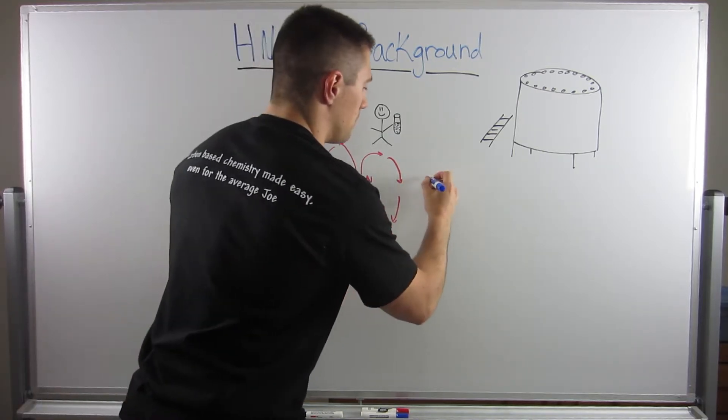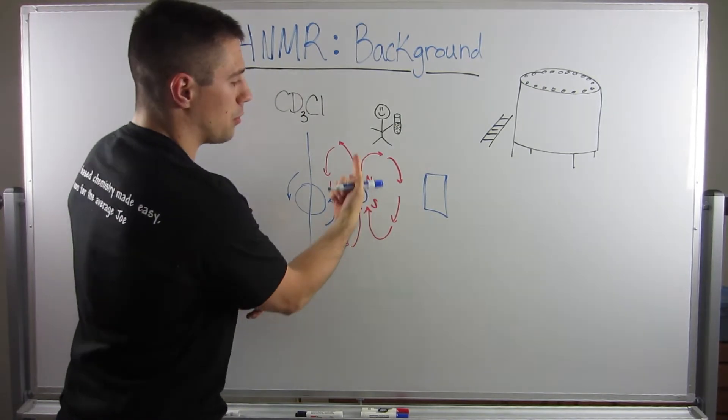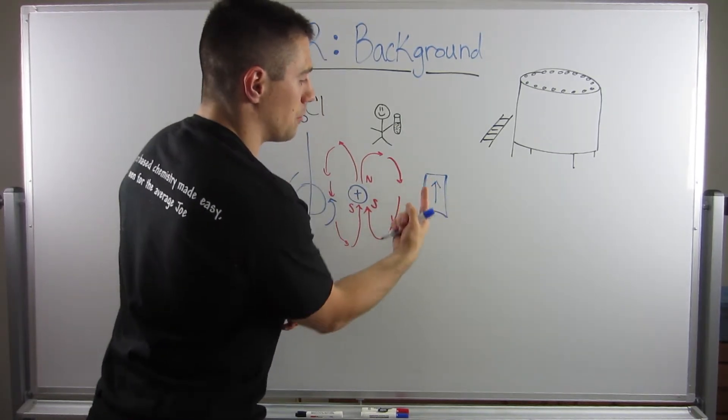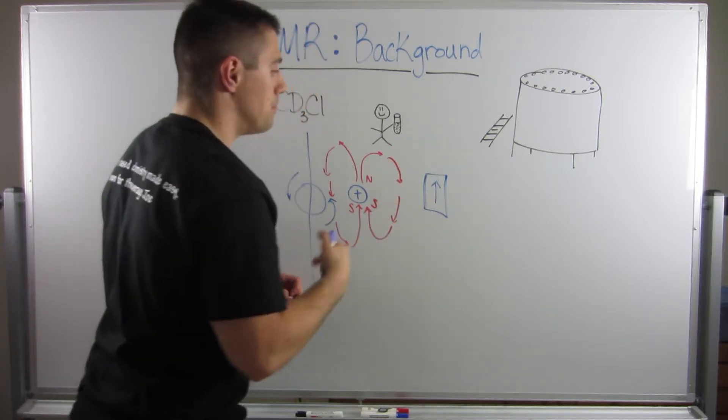And I'm going to designate them by looking like this. So because the North Pole is going this way, I'll draw a little bar. Or this magnet would be facing this way, its North Pole is going up.